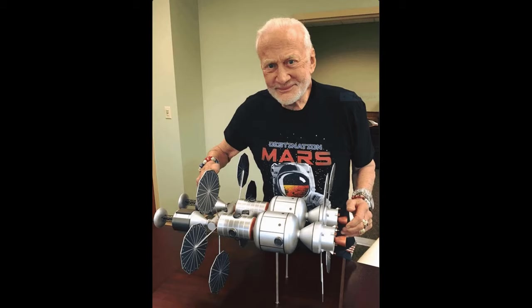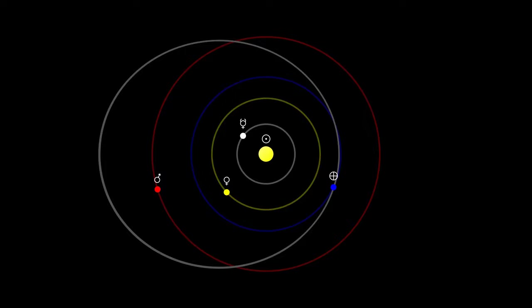In 1985, astronaut Buzz Aldrin proposed a spacecraft called a Mars Cycler, often called an Aldrin Cycler, that would help shuttle people and supplies between Earth and a future Mars colony.